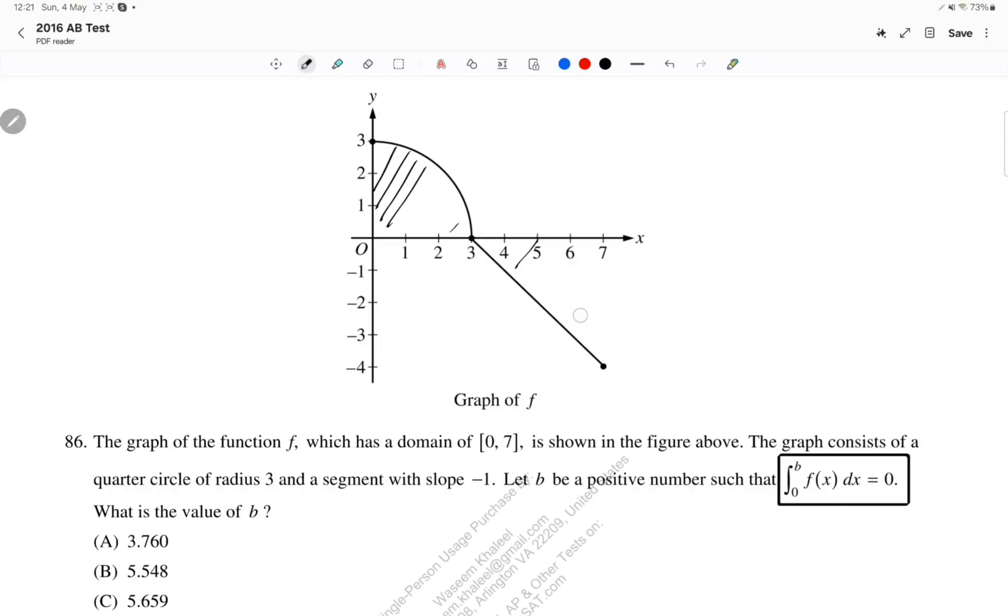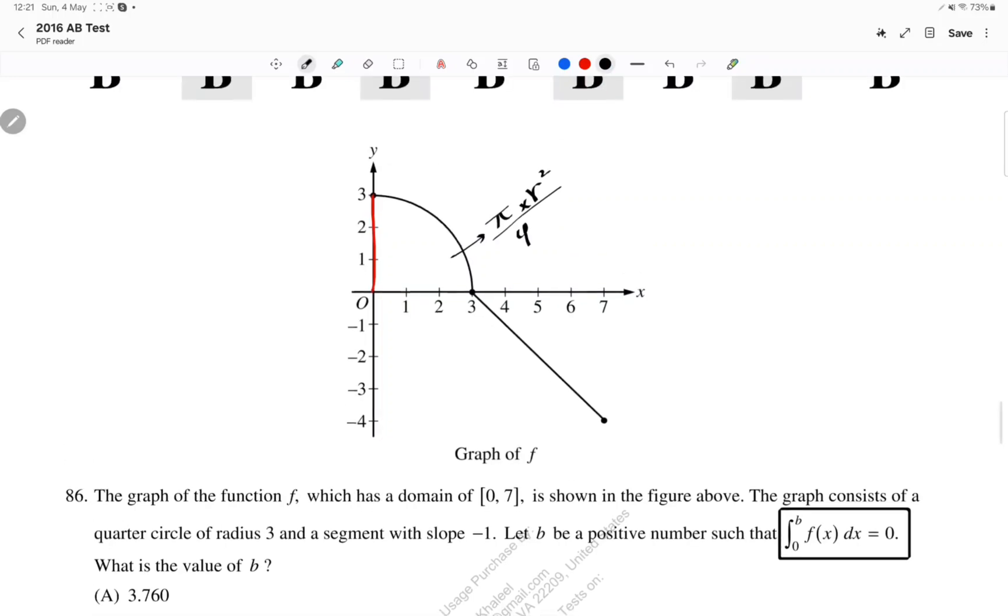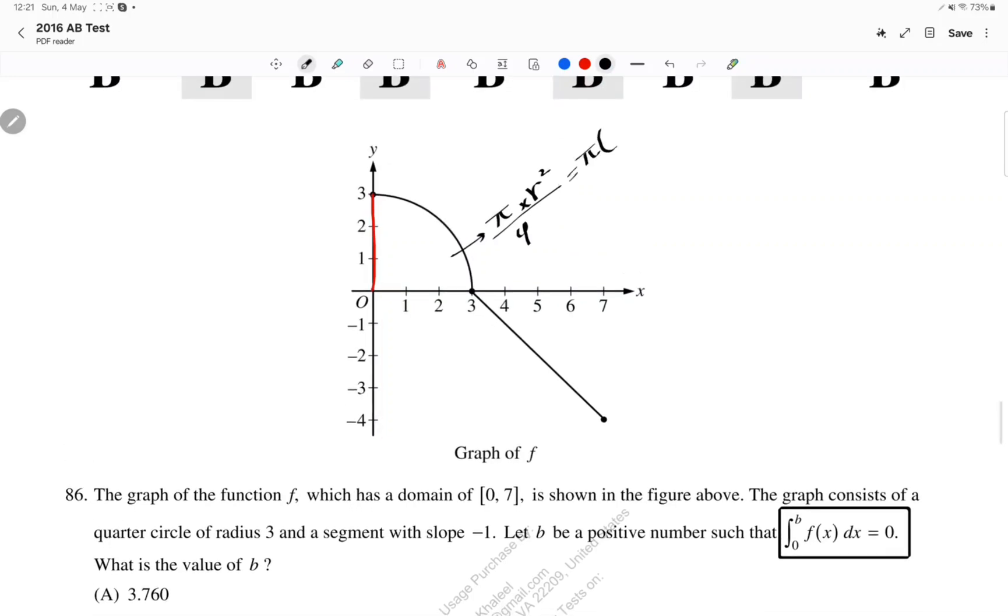Now, let's first find the area of this quarter circle. It's going to be πr² over 4. So the r is going to be 3, so it's going to be π times 9 over 4. We're going to find out how much that is later on in decimals.